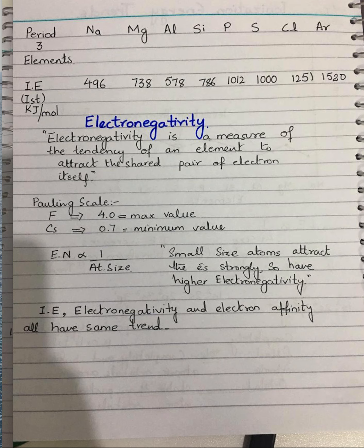On the other hand, looking at the extreme end of this period — sulfur, chlorine, or argon — argon has got the maximum ionization potential, which is 1520. Comparing chlorine and argon, there is a large difference: 1251 versus 1520. This is because argon is a noble gas, and its outermost shell is complete. Therefore, a lot of energy will be required to remove an electron, because it is already stable.